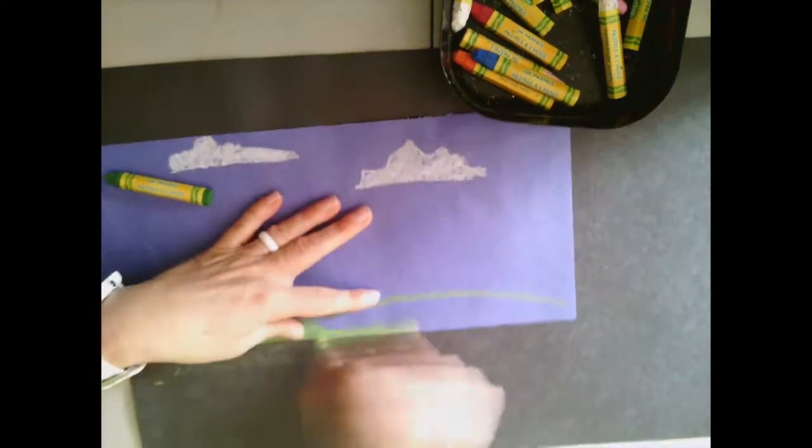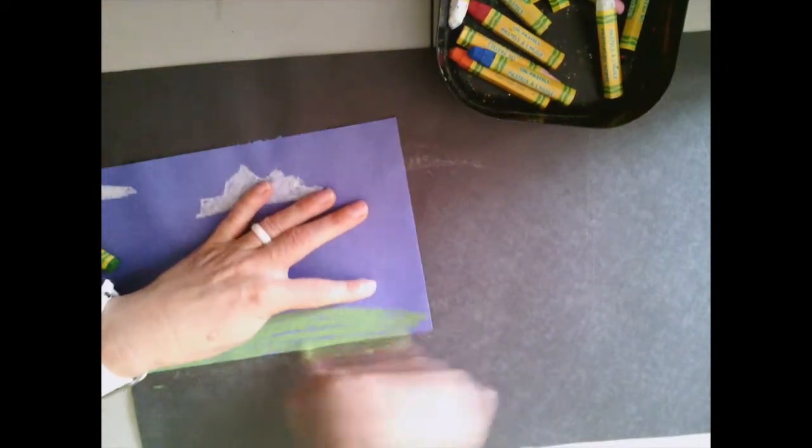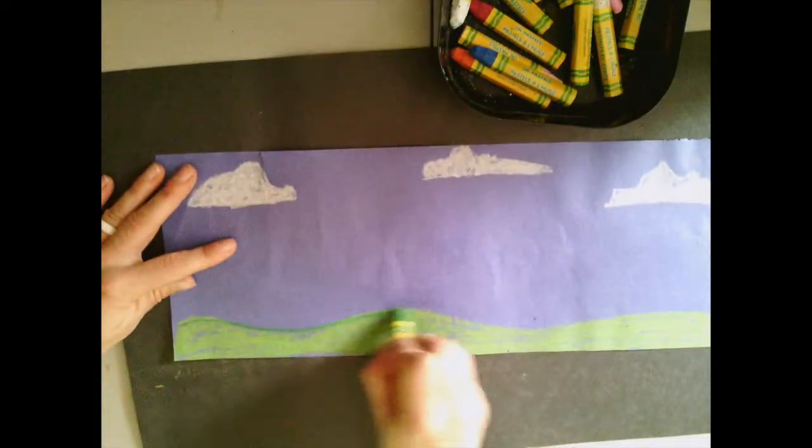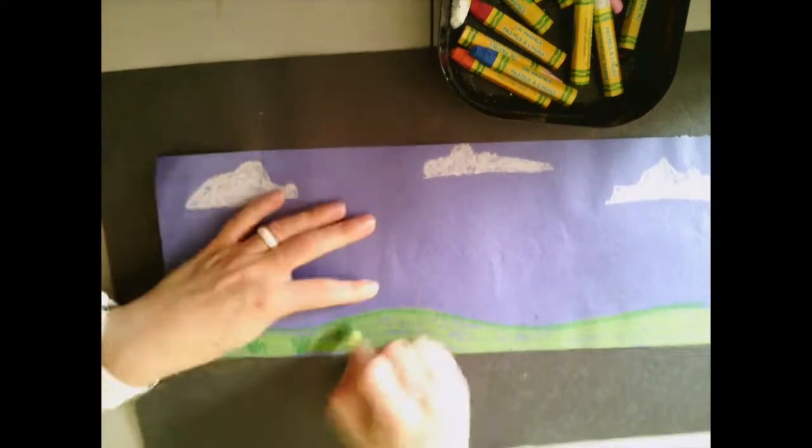I begin with some clouds. I'm adding on some grass. You could add a few trees. You could make it into any kind of landscape that you would like.